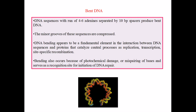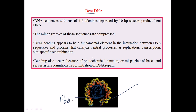Let us talk about bent DNA. As the name suggests, and as the picture is suggesting, bent DNA means the DNA structure is slightly bent in such a way that it can wrap around a circular molecule. The most common type of circular molecule that DNA wraps around are proteins, and this DNA will bend onto that protein to form a specific structure.